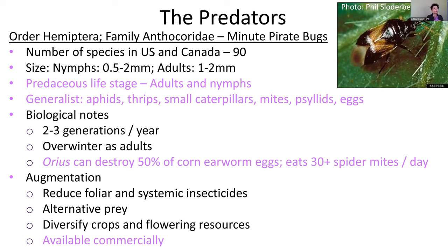Minute pirate bugs feed on aphids, thrips, small caterpillars, mites, and other insect eggs. The genus Orius can destroy about 15 percent of corn earworm eggs relatively quickly and can eat about 30-plus spider mites in a day. This is also an example of an insect available commercially for augmentation biological control — you could buy and release it into your landscape. When commercially buying a natural enemy, make sure you're buying a species appropriate for your region.